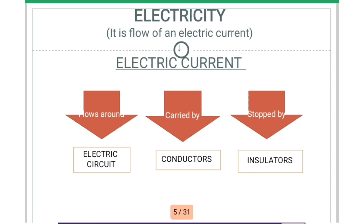So what is electric current? Electric current means the flow of charges.